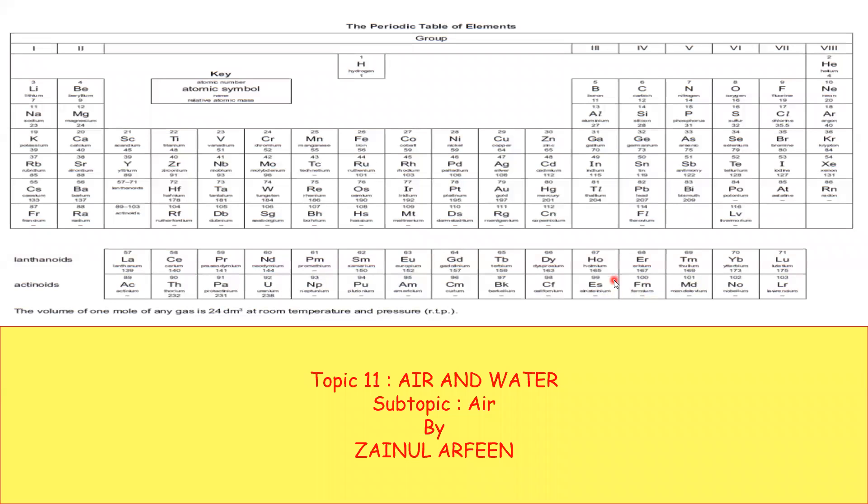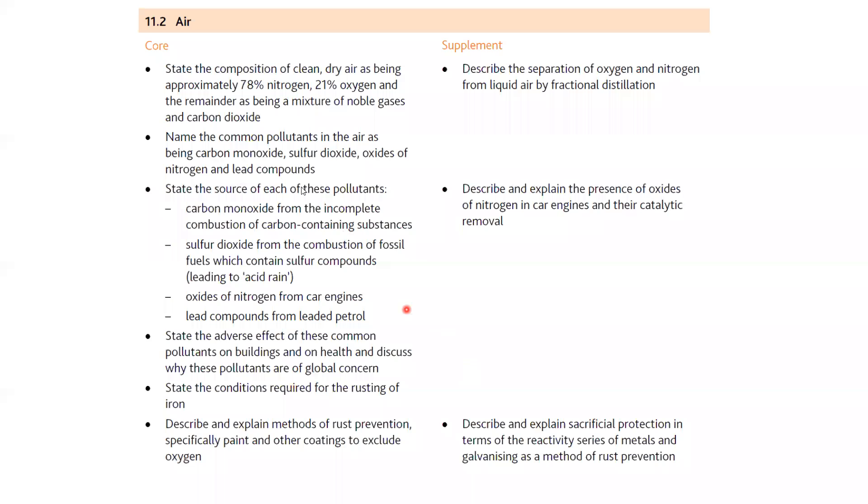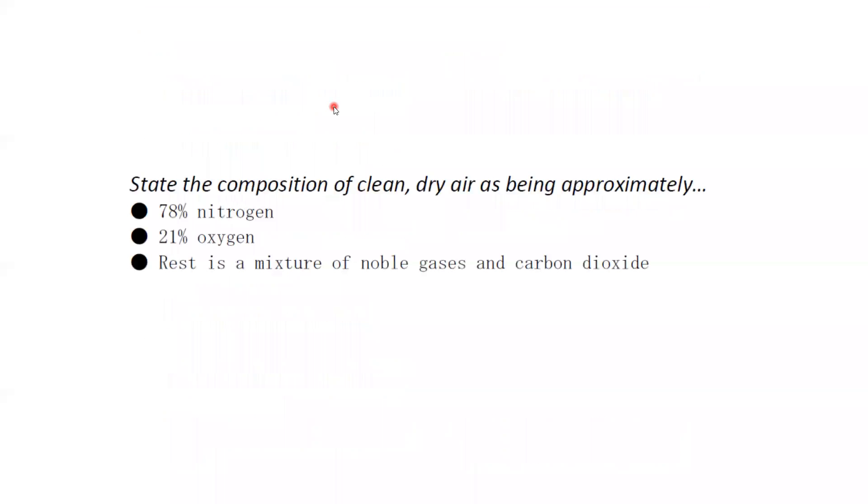The second part of the chapter is about air. The subtopic is air and water, but this section focuses on air. These are the learning objectives: the composition of dry air. You should know that air contains about 78% nitrogen, 21% oxygen, and the rest is a mixture of noble gases and carbon dioxide.